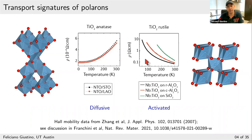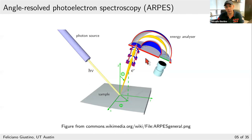Starting from 2013, there was a series of very beautiful angle-resolved photoelectron spectroscopy (ARPES) experiments that showed the existence of new features in band structures of insulators attributed to the formation of polarons. These experiments really kick-started a lot of effort on both the theory and experimental side to better understand polarons.